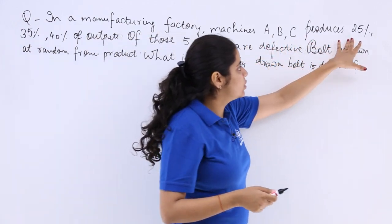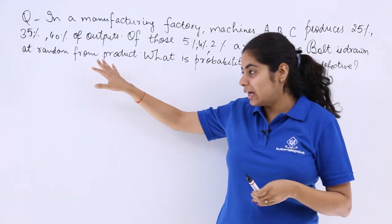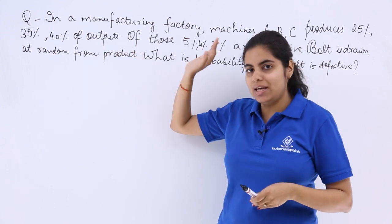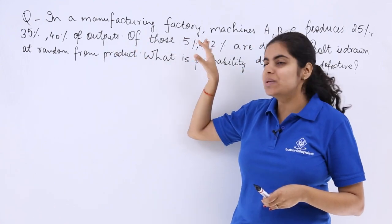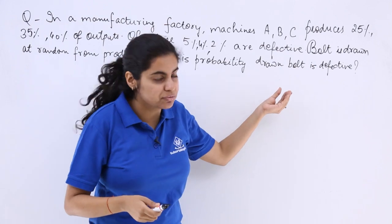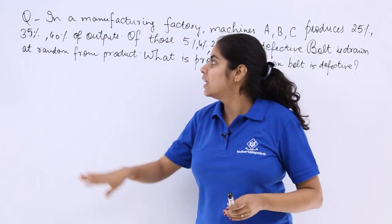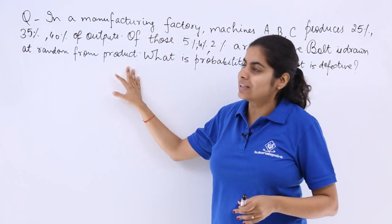machines A, B, C produce 25%, 35%, 40% of the outputs. Of those, 5%, 4%, 2% are defective. A bolt is drawn at random from the product.